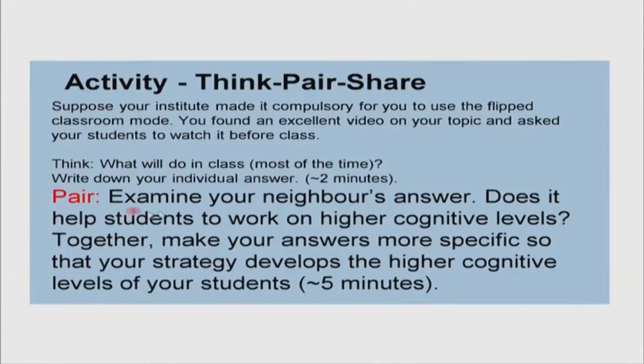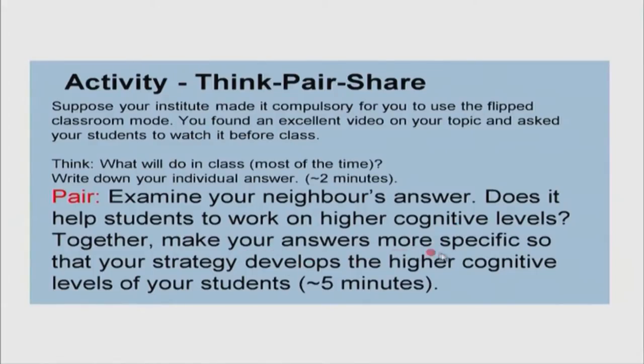Let us move to the pair phase. What you want to do is examine your neighbor's answer. Here is the important thing where you will apply what you have learned since the morning — examine whether it helps the student to work on higher cognitive levels. Higher cognitive levels means apply and analyze, rather than simply repeat or clarify. Together make your answers more specific so that your strategy develops the higher cognitive levels of your students — they should go beyond simply being able to explain what is an array, and should be able to create a program which involves arrays. What is the activity that you will do in order to facilitate that? You have about 5 minutes for this discussion.